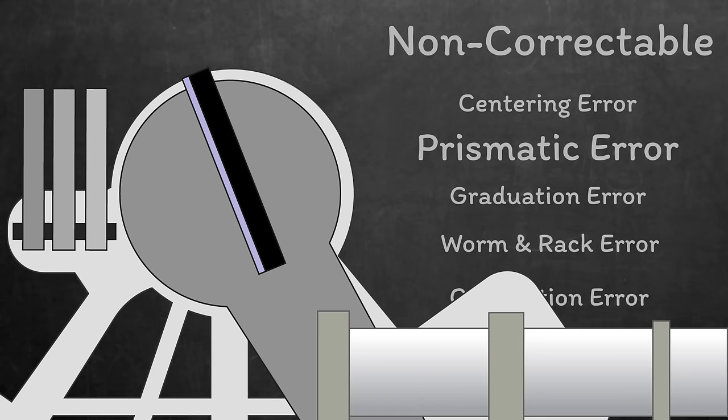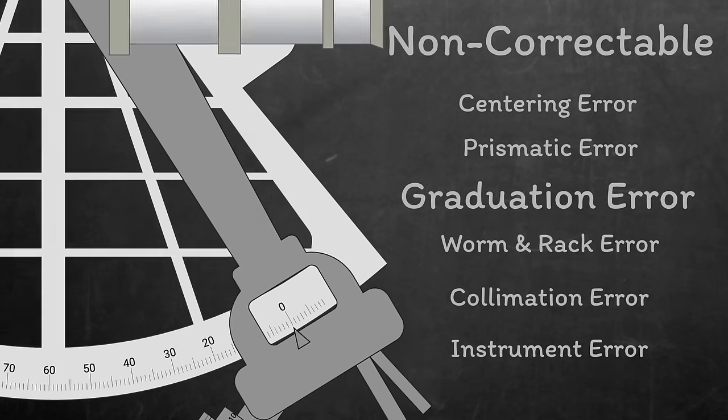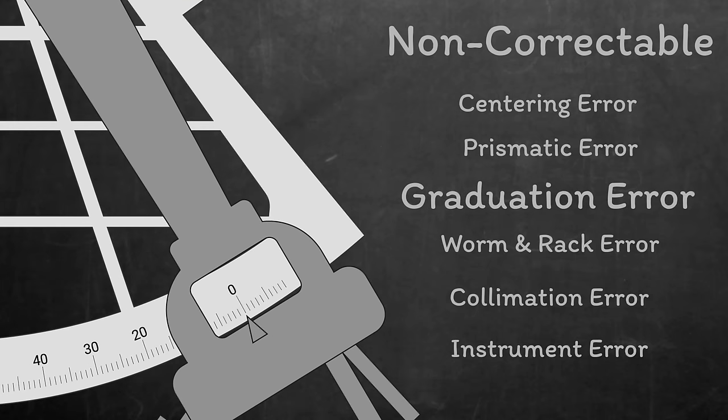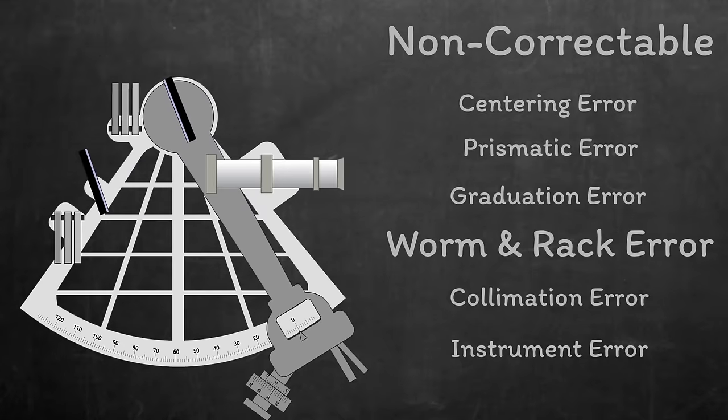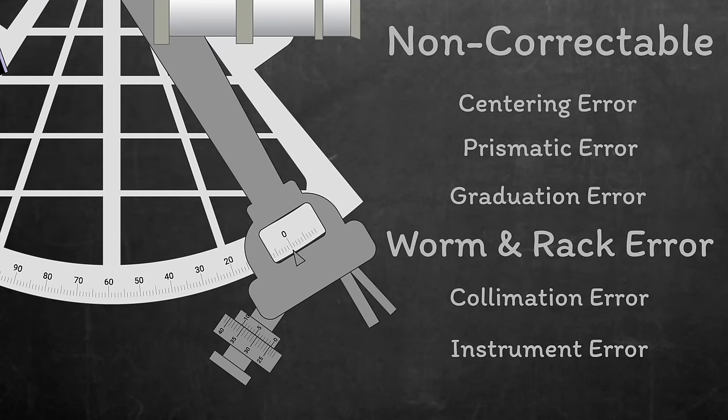Shade error is the same thing, but it's for the shades and it causes a slight deflection in the ray of light as it passes through the glass pane. Graduation error is to do with inaccuracies in the graduations of the scale, the vernier or the micrometer drum. Worm and rack is effectively the wearing of the cogs that control the fine movement of the index arm.